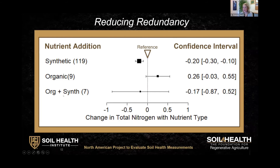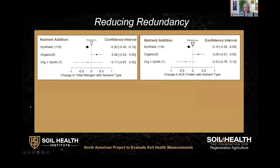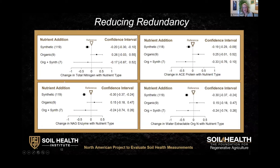Those that have had both organic and synthetic nutrient additions show no difference from total nitrogen in the reference sites. When we do the same comparison with autoclave citrate extractable protein — the nitrogen measurement used in the Cornell assessment of soil health — we see the same pattern. When we look at N-acetyl beta-glucosaminidase, a nitrogen cycling enzyme recommended by the NRCS in their technical report, we again see the same pattern. With water extractable organic nitrogen in the Haney test, again the same pattern. We've done these same analyses for intensity of tillage, cover crops, and cropping diversities, and for suites of carbon measurements and aggregate stability. In many cases, we see similar responses to management among multiple methods of measurement.